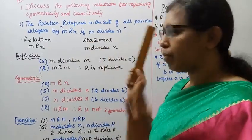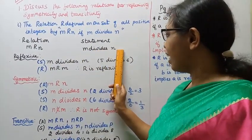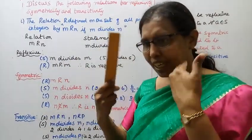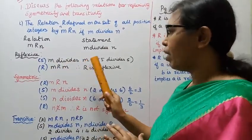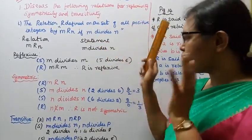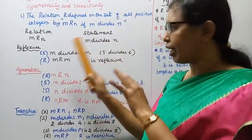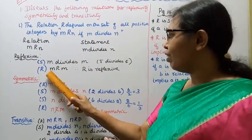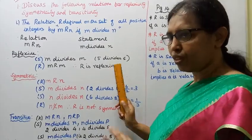Reflexive: The statement is M divides N. For reflexivity, we check M divides M. For example, 5 divides 5, which equals 1 — a positive integer. Since M divides M, M is related to M. Therefore R is reflexive.